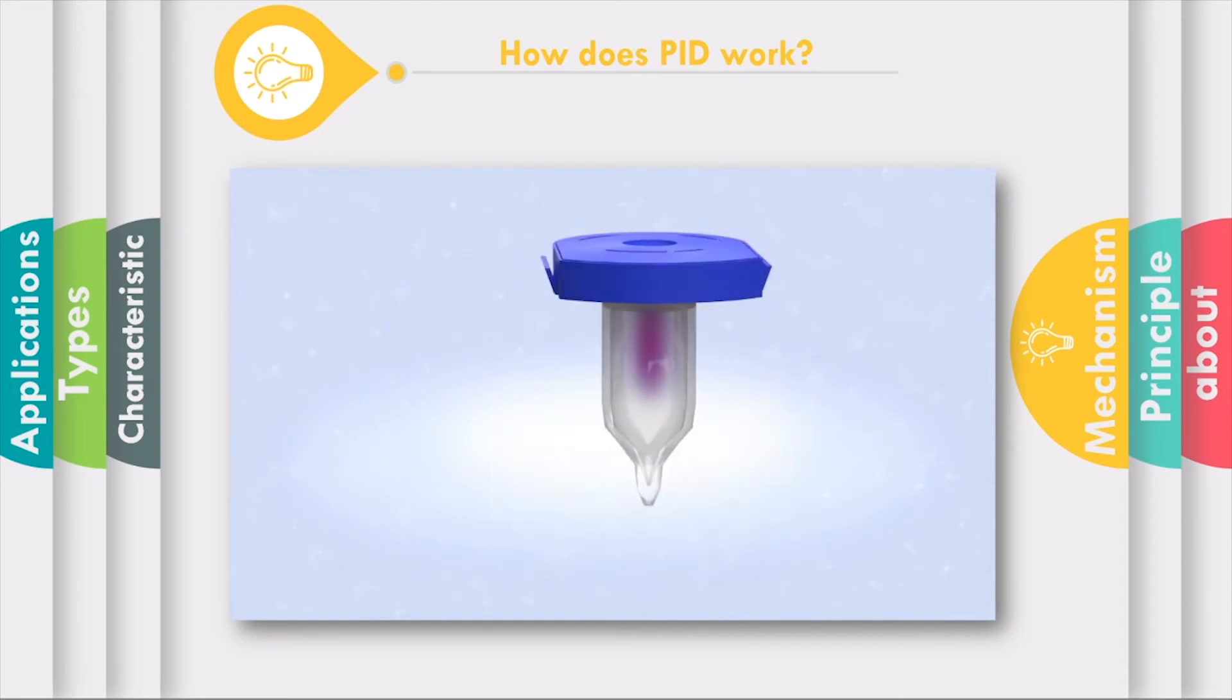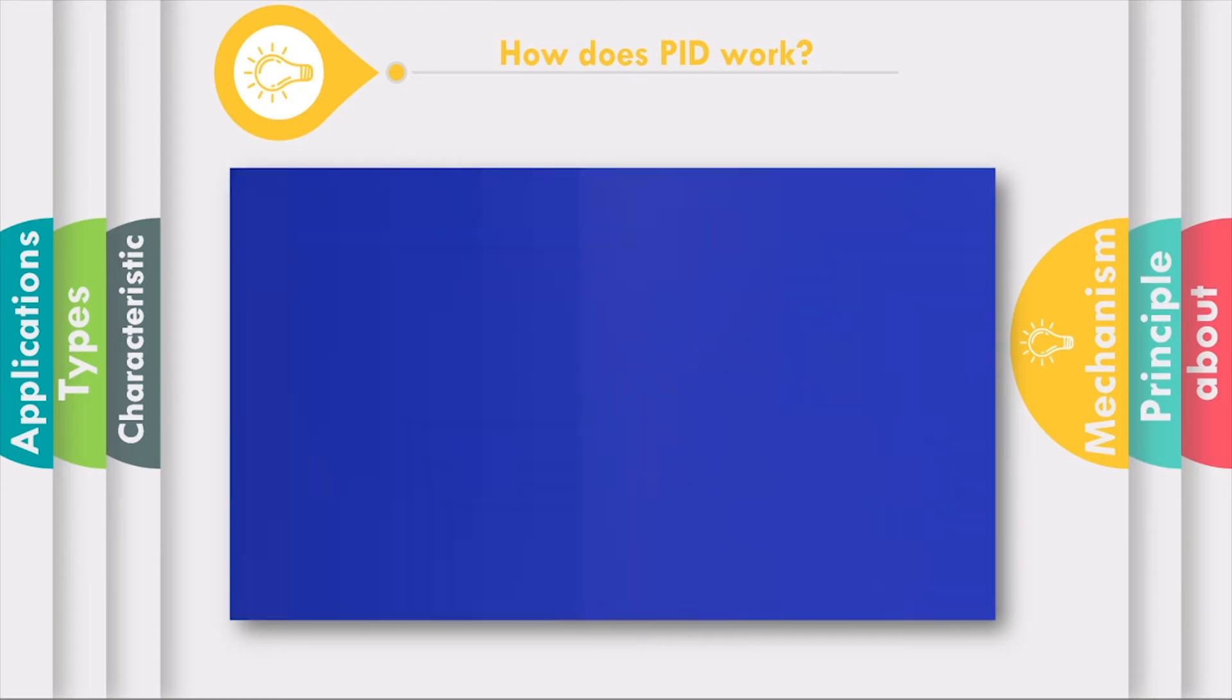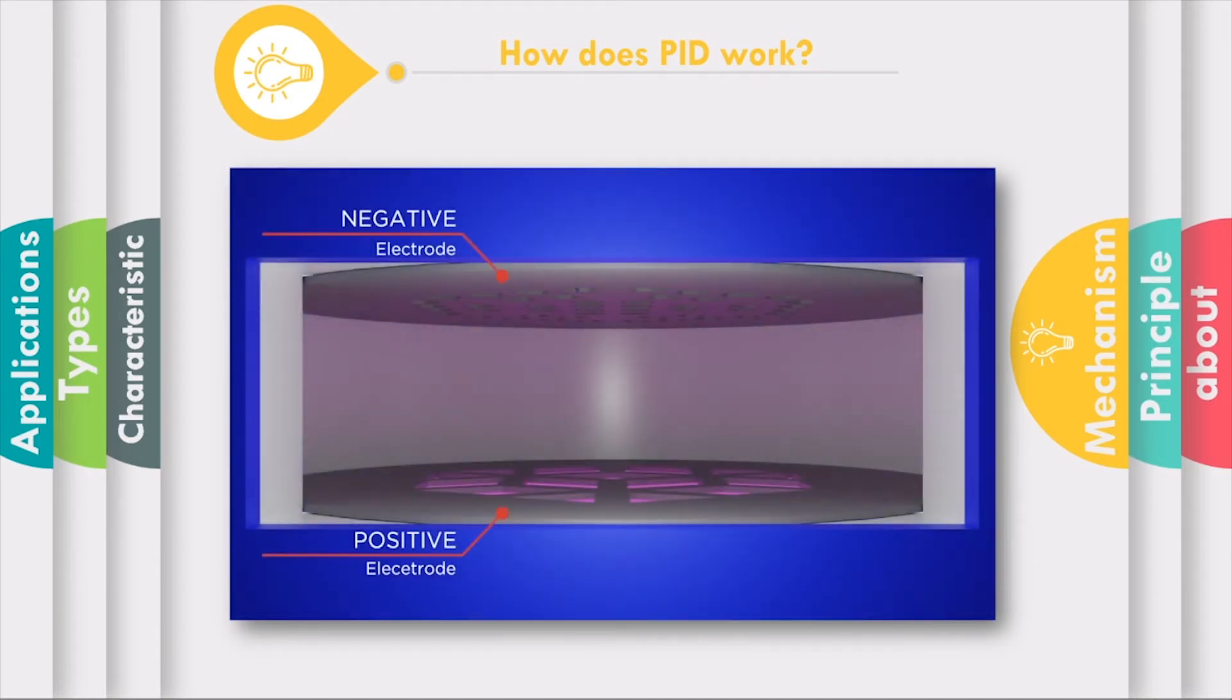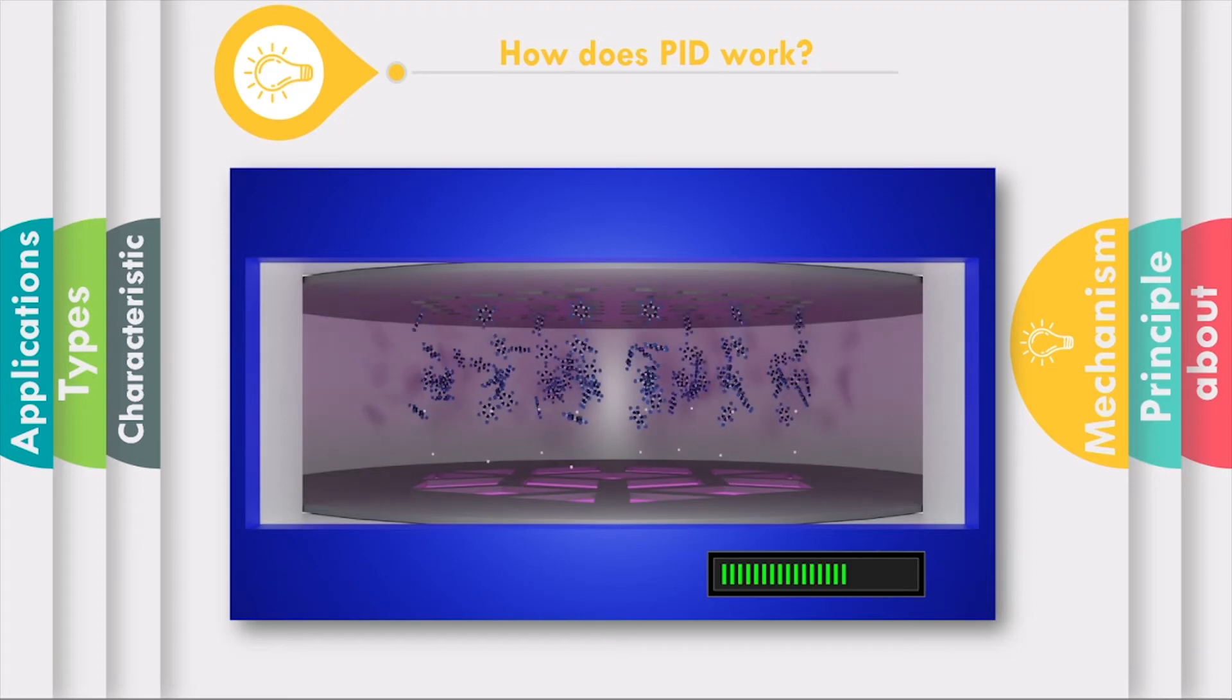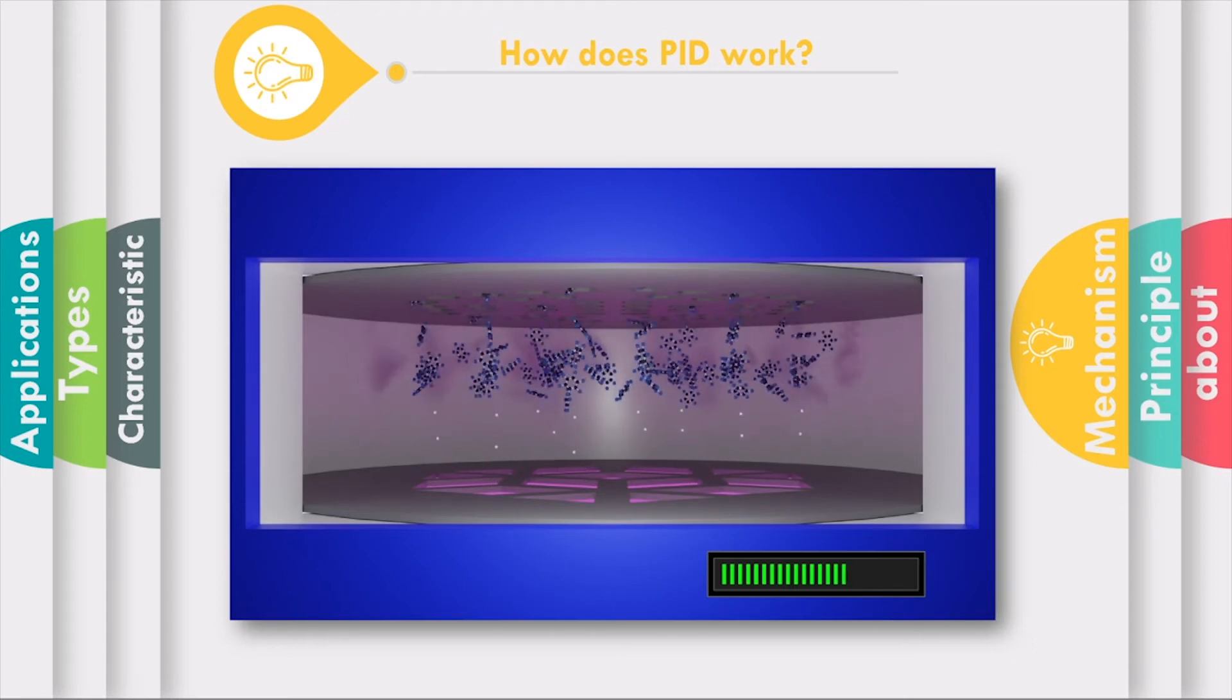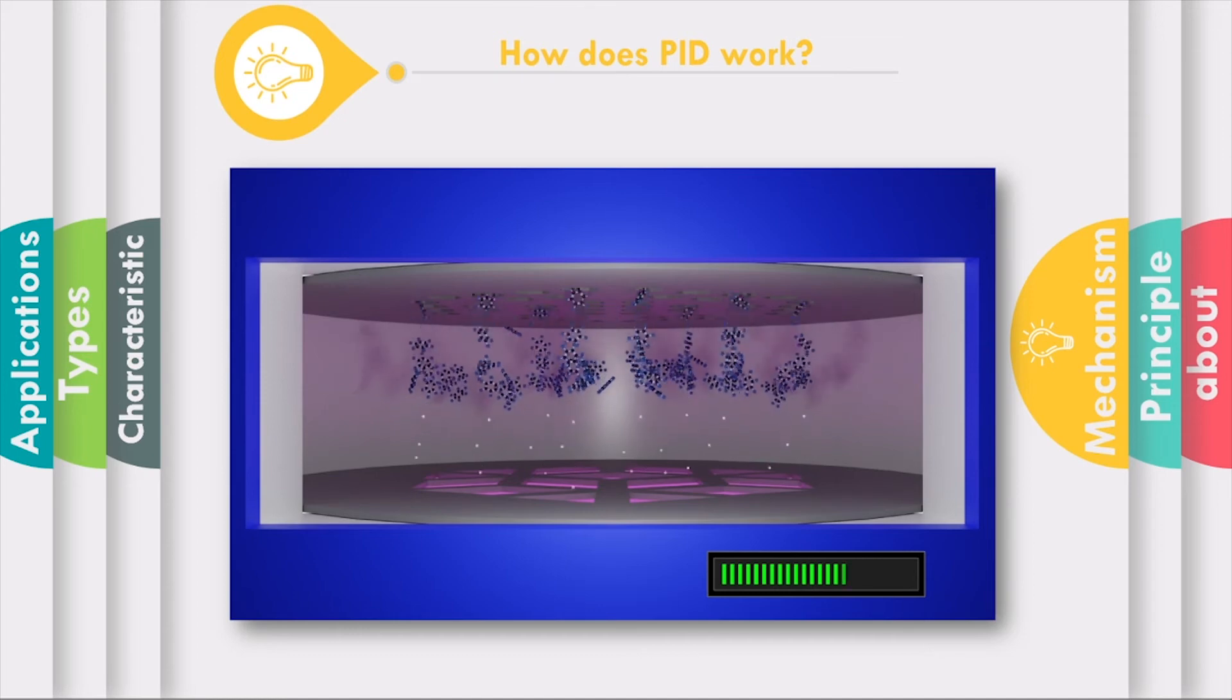Typical photo ionization sensors consist of a high energy ultraviolet lamp and two electrodes. Volatile organic compound gases enter the detection chamber and are ionized by the ultraviolet light. A negatively charged electron is ejected from the molecule, making it positively charged. The negatively charged electron is attracted to the positively charged electrode. The positively charged molecules are then attracted to the negative electrode. This creates a tiny current, which is then amplified. The signal increases and decreases with the VOC gas concentration.